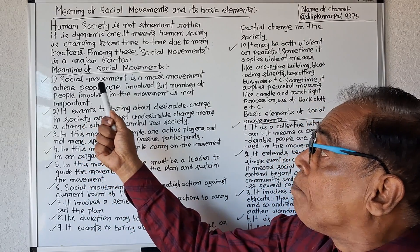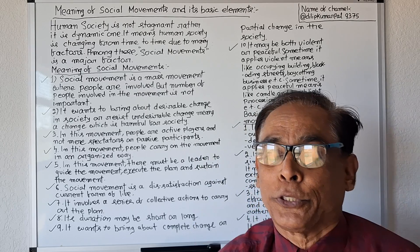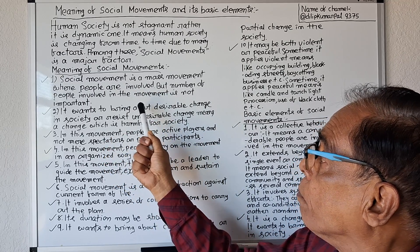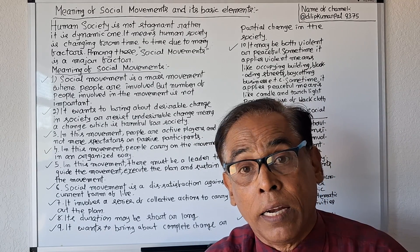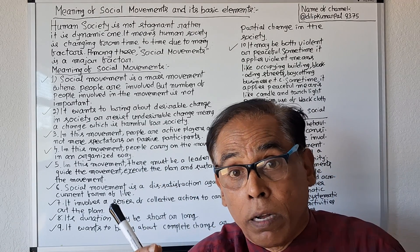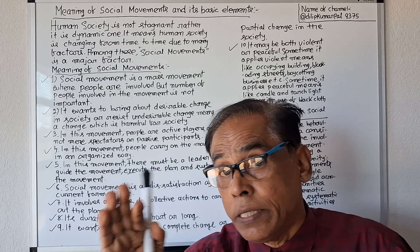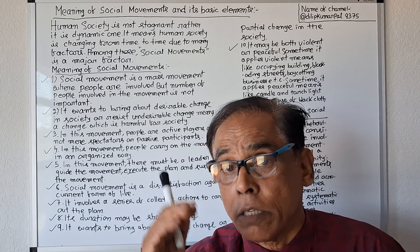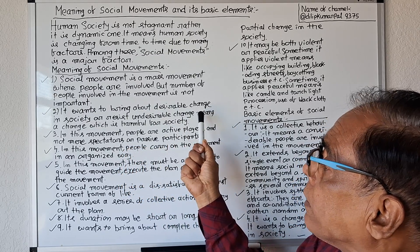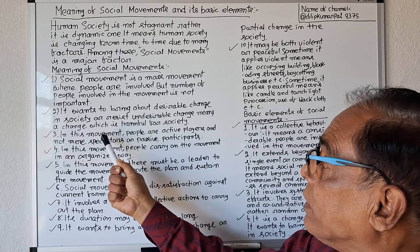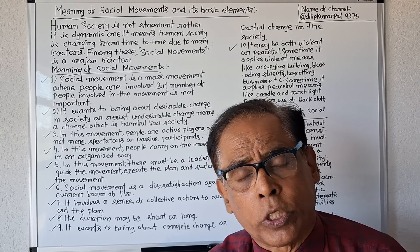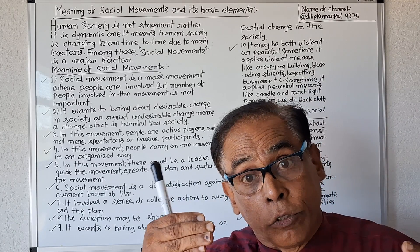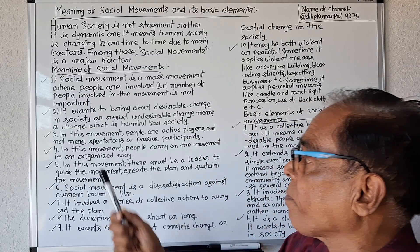Social movement has some principles. Number one: social movement is a mass movement where people are involved, but the number of people involved is not important. Number two: it wants to bring about desirable change in society or resist undesirable change — meaning it promotes changes good for society and resists changes that are harmful.